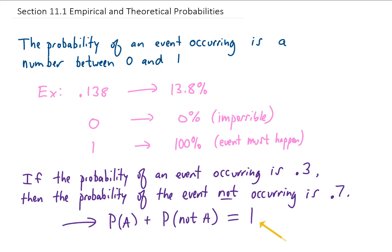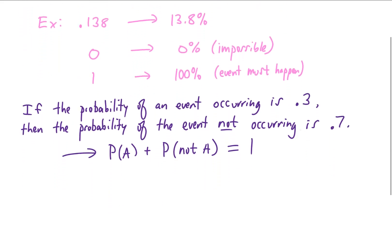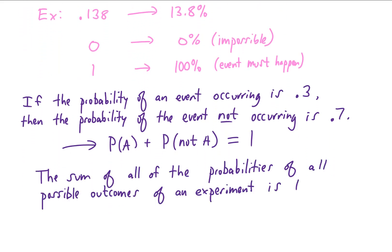There is a 100% chance that either an event will happen or it won't happen. Along this same line of logic, if we want to get a little bit more general with this, what we can say is that the sum of all of the probabilities of all of the possible outcomes of some experiment has to be 1. All this really says is that something has to happen. There's a 100% chance that some outcome of this experiment will happen.